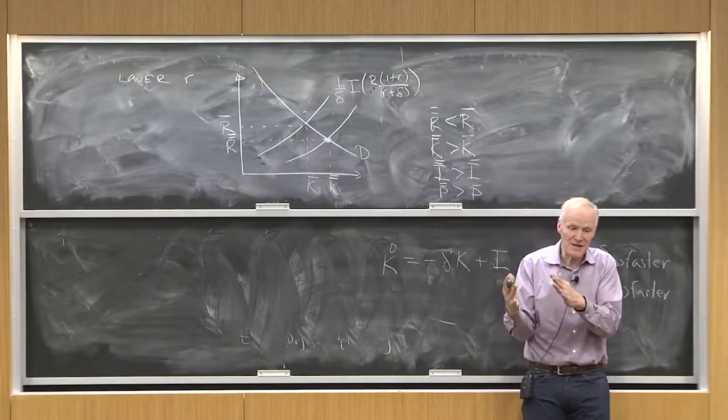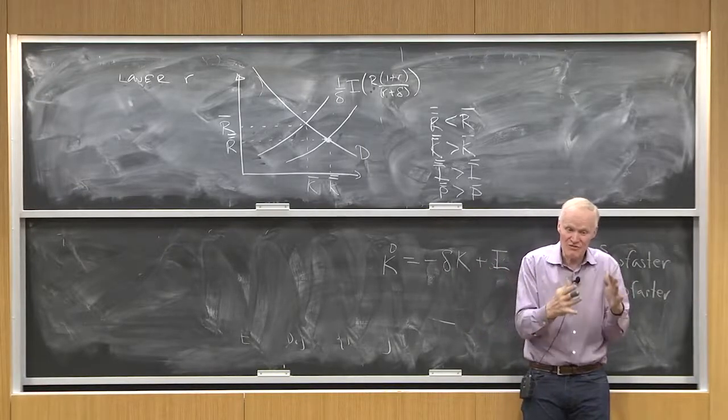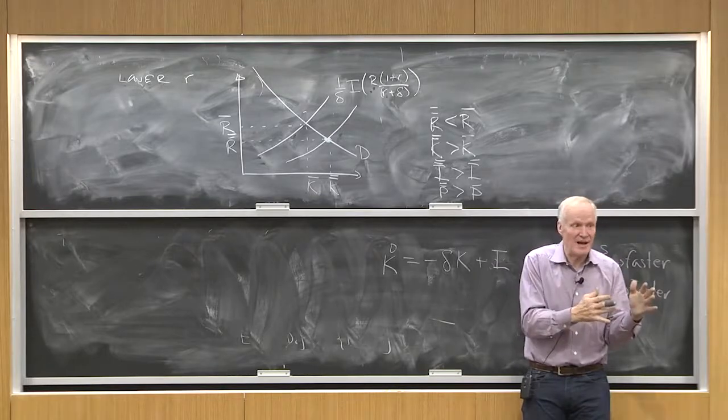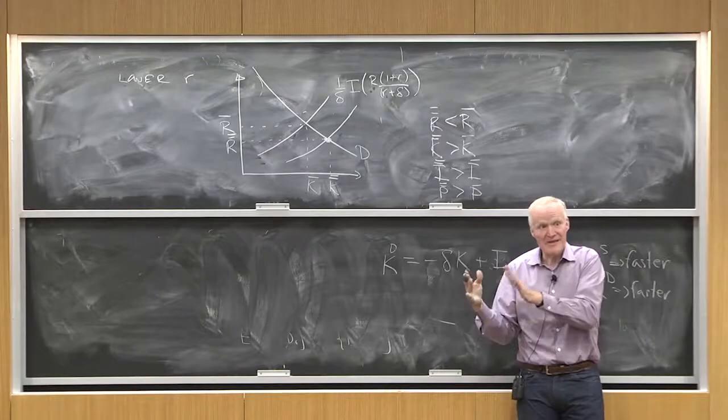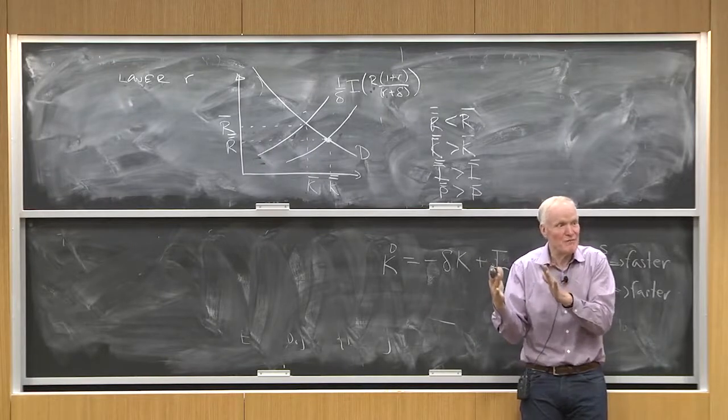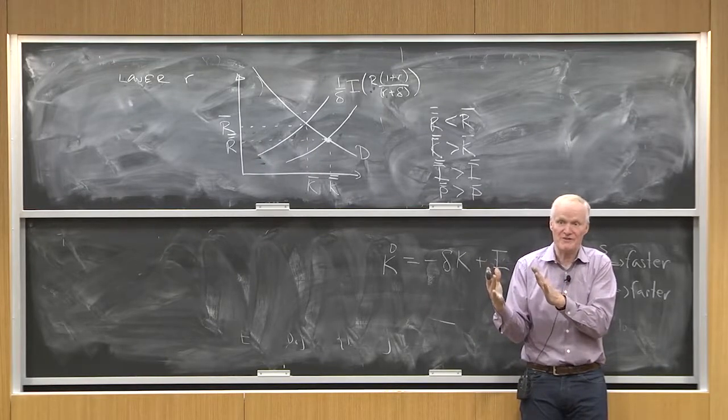Now, the interest rate comes in because doing stuff too early happens earlier in time. Doing stuff too late happens later in time. And, the interest rate determines the rate at which I'm willing to trade those two things off against each other.